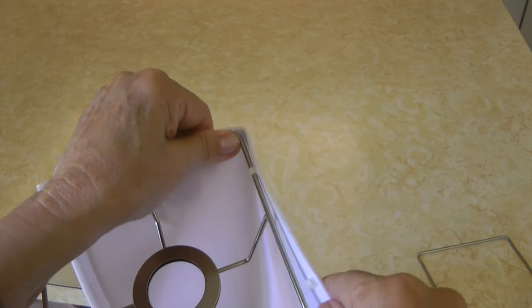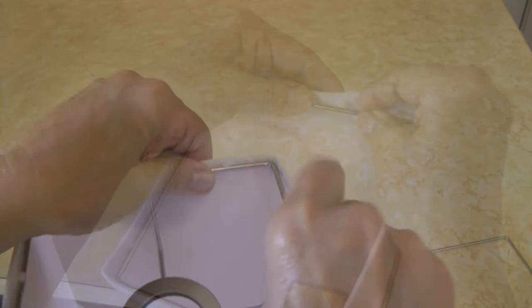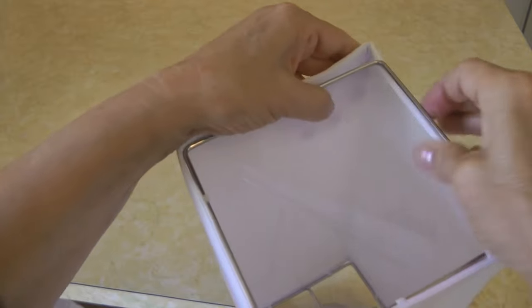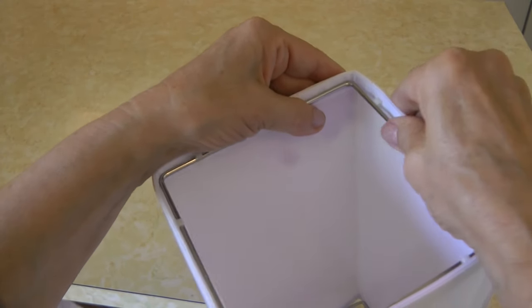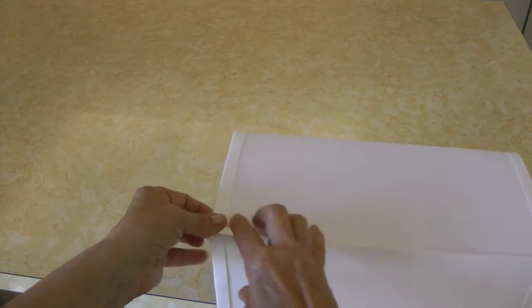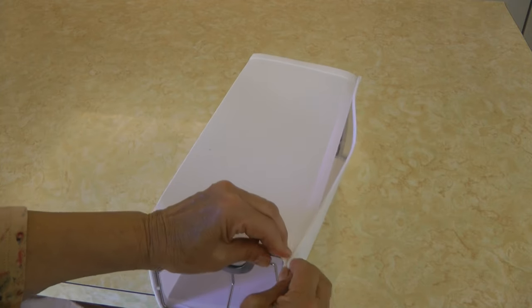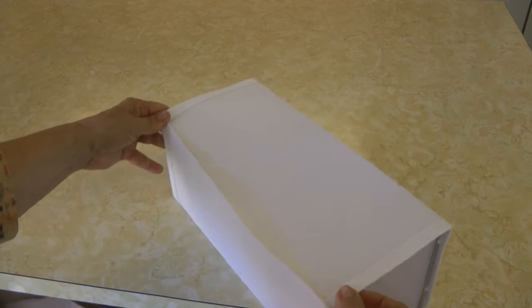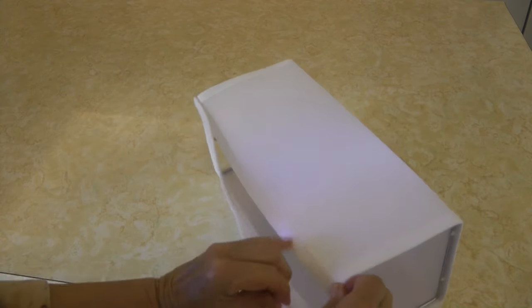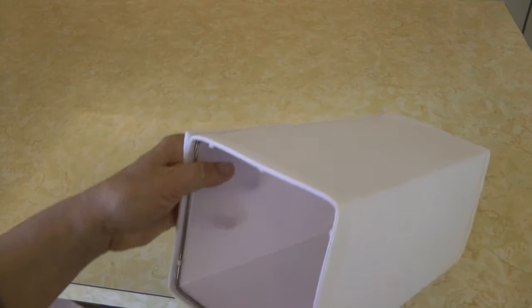And then hook it together with the velcro. Bend the scratchy side over and under, and press it together. It's so simple.